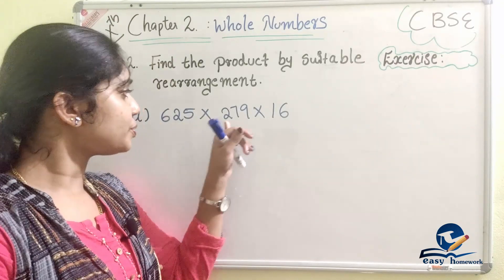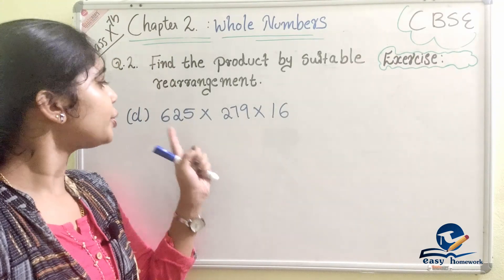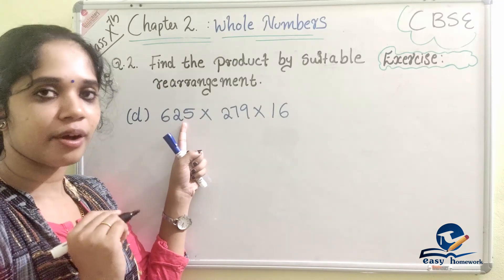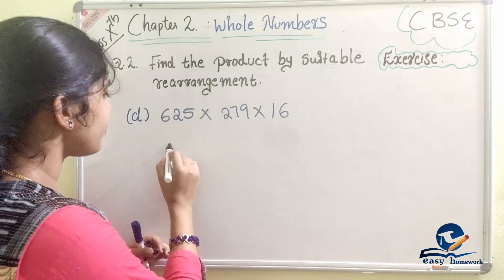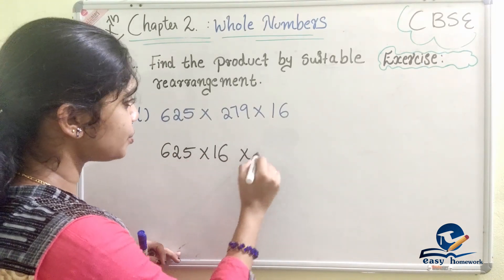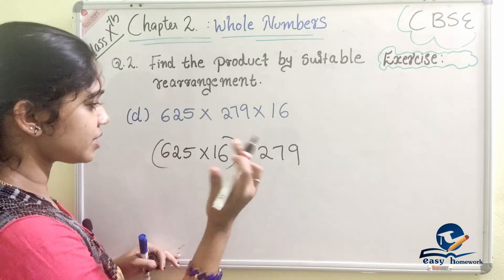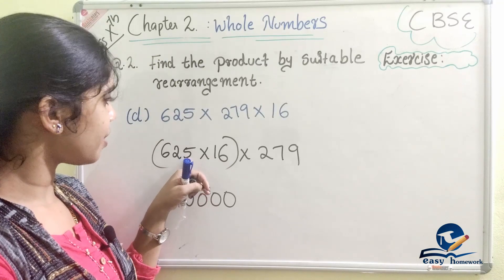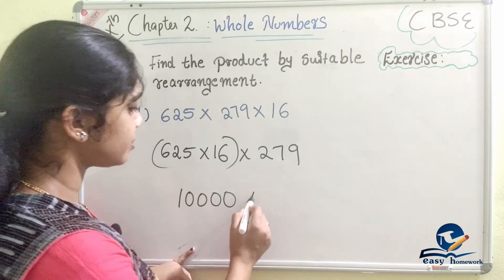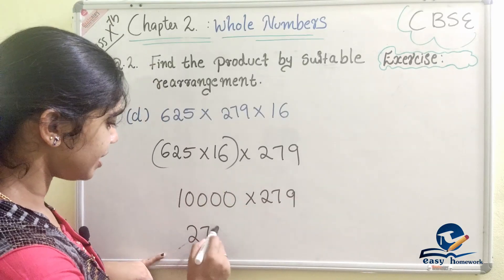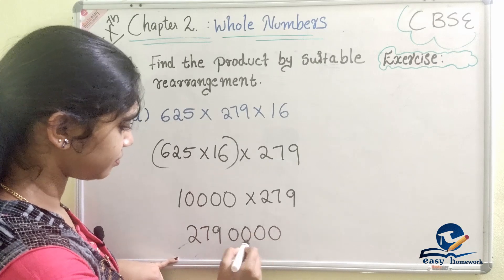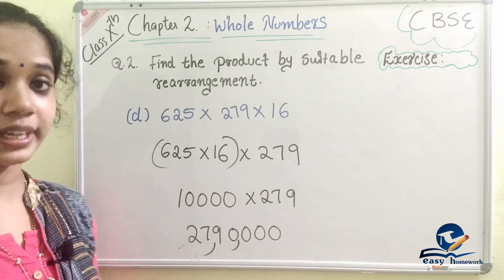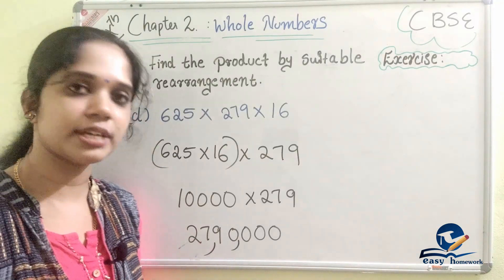Next question: 625 × 279 × 16. We rearrange and calculate 625 × 16 first. 625 × 16 = 10,000. Then 10,000 × 279 gives us 2,790,000. The answer is 27,090,000.